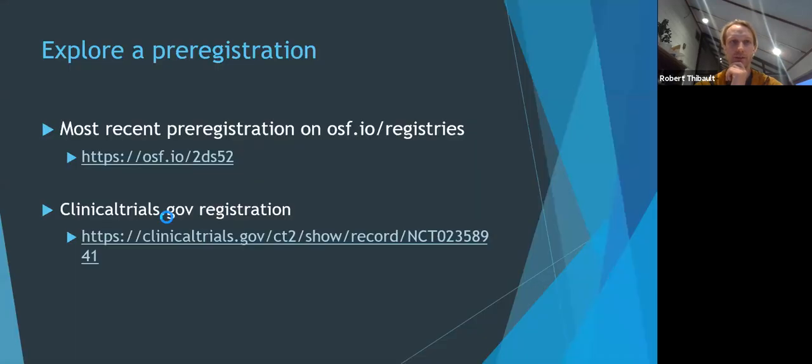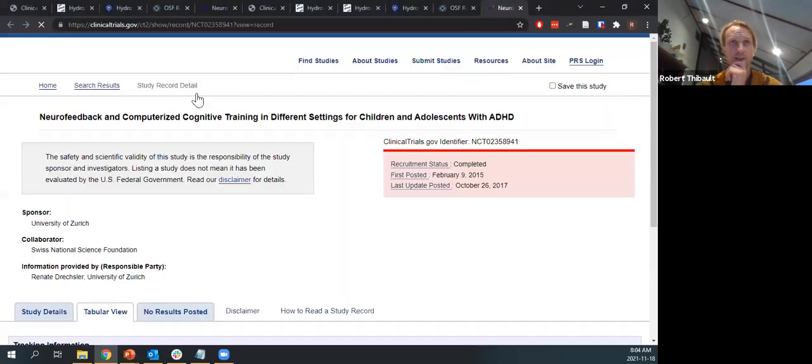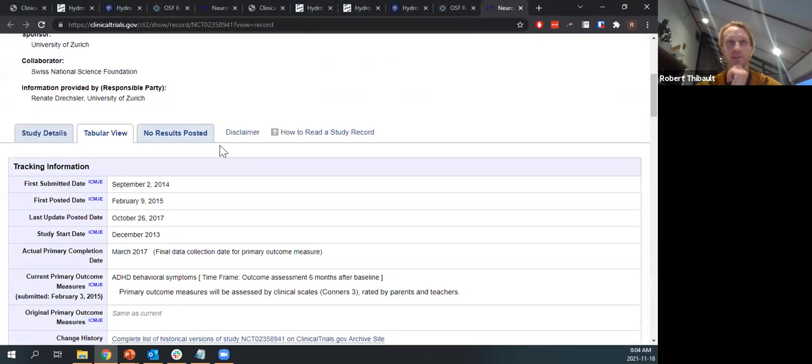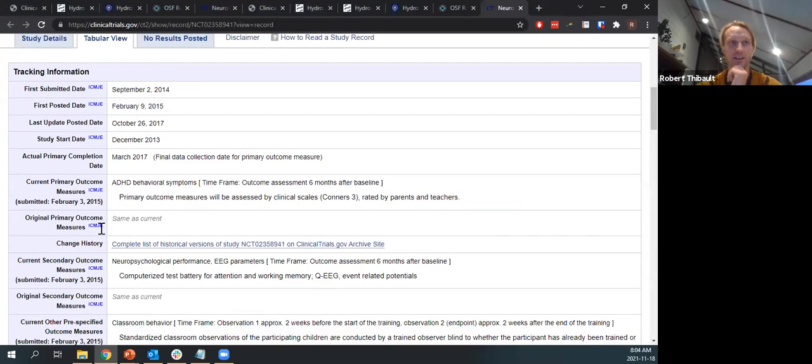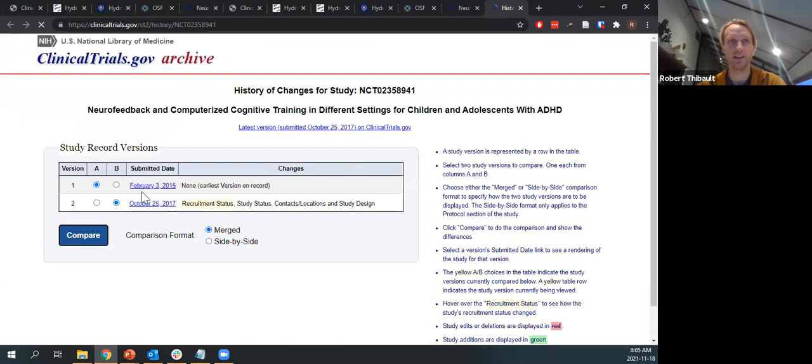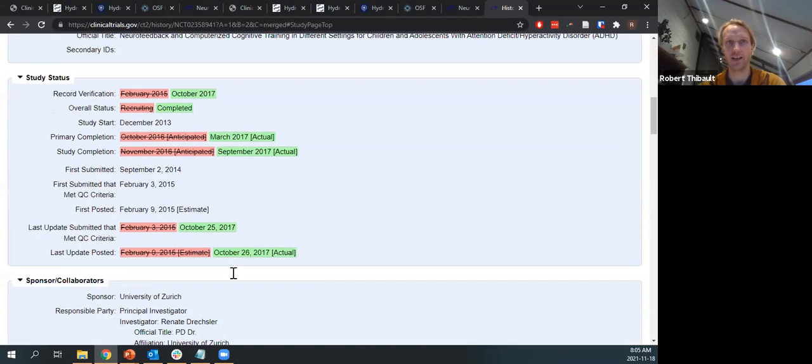and like i showed earlier 10 to somewhere between 10 to 68 percent of registered studies have discrepancies in their primary outcome we can open a pre-registration here just to see how how it differs from clinical trial registrations this was just the most recent one on the osf registries you can see there's big blocks of text there's a hypothesis which wasn't in clinical trials there's more info about data collection sample size rationale there's much more information in some regards than on the clinical trials registries but there's not clearly demarcated boxes saying what is their primary outcome what are they most interested in